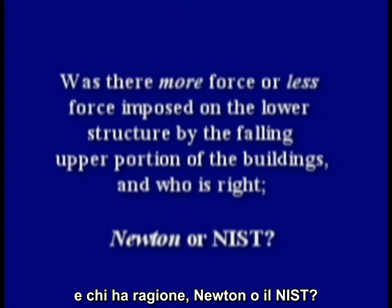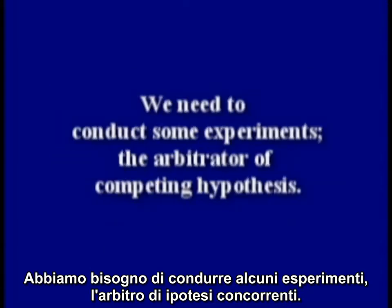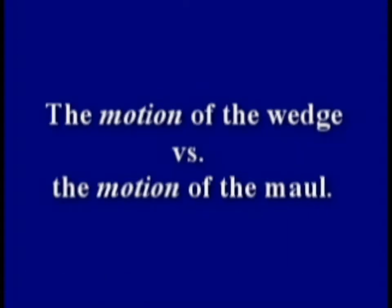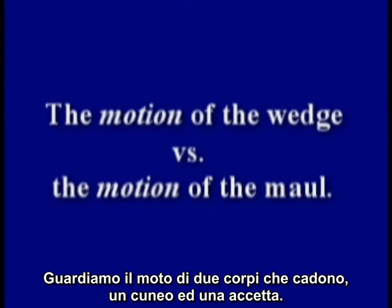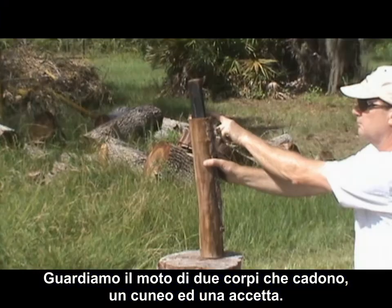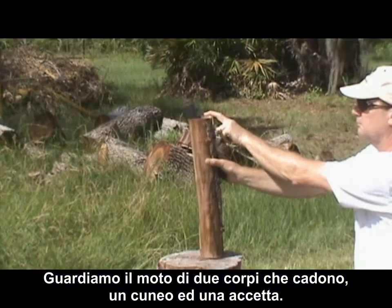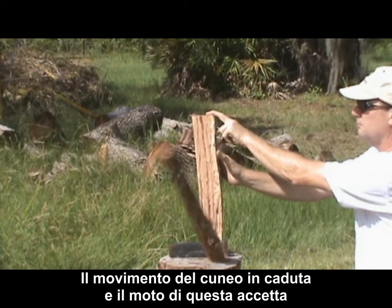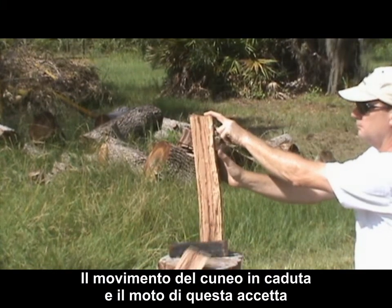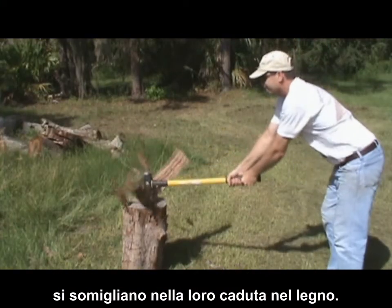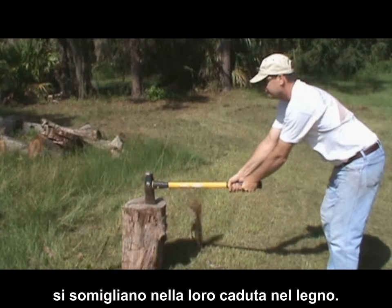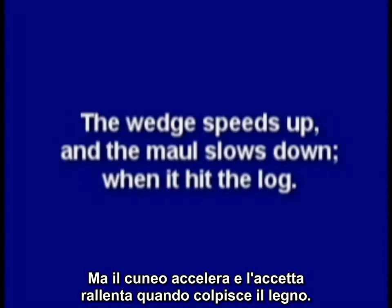Newton or NIST? We need to conduct some experiments, the arbitrator of competing hypotheses. Let's look at the motion of two falling bodies: a splitting wedge and a splitting maul. The motion of this falling wedge and the motion of this maul look similar as both fall through the log. But the wedge speeds up and the maul slows down when it hits the log.